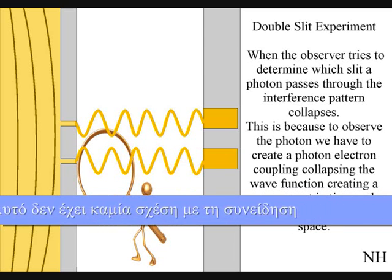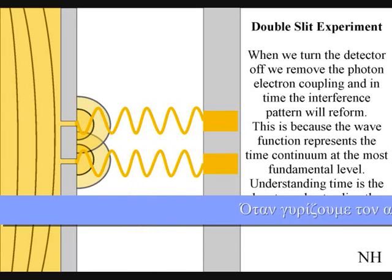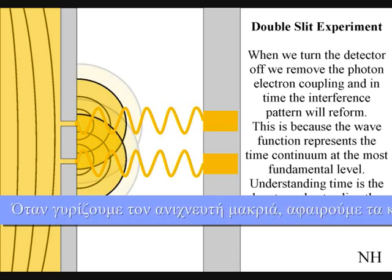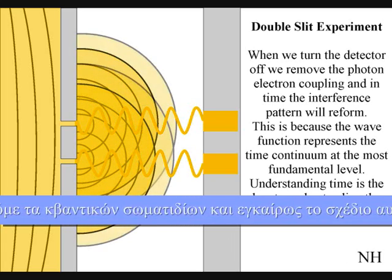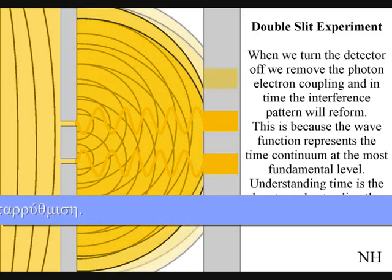If we turn the detector off, we remove the photon-electron coupling, and in time the interference pattern will reform. Just like in Newton's first law of motion, the interference pattern will continue to maintain its state unless acted upon by an external force.